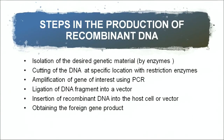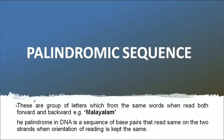Then comes the cutting of DNA at a specific location with a restriction enzyme. The characteristic of restriction enzymes that is helpful is that they create sticky ends because they recognize palindromic sequences. Palindromic sequences are groups of letters which form the same words when read both forward and backward — for example, 'Malayalam.' In DNA, a palindromic sequence is a sequence of base pairs that reads the same on both strands when the orientation of reading is kept the same.